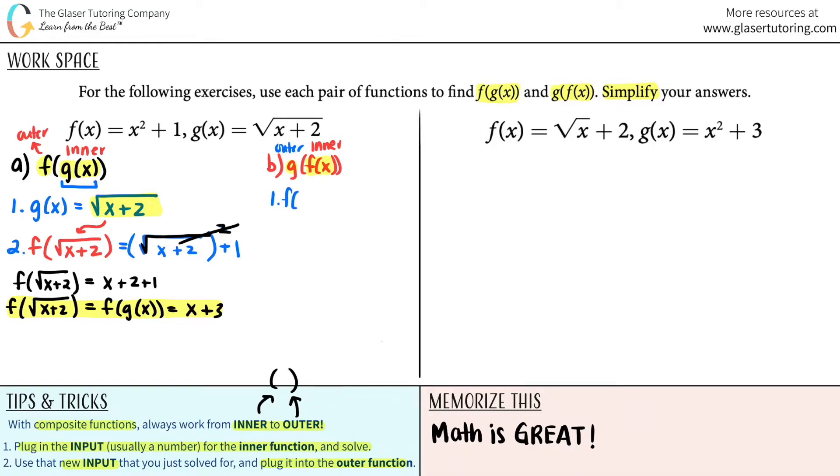Number one, f of x in this case is what? X squared plus one. So x squared plus one. Can't do anything because they didn't give us any number to plug in. So now we move on to the second part. I use this input and I plug it in for the outer function, which was g. So it would be g of x squared plus one. I plug in that value for all x's.